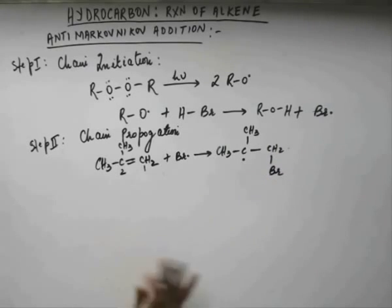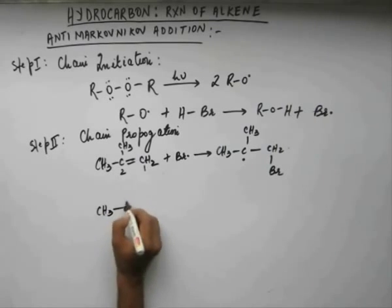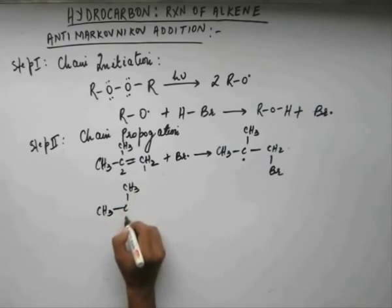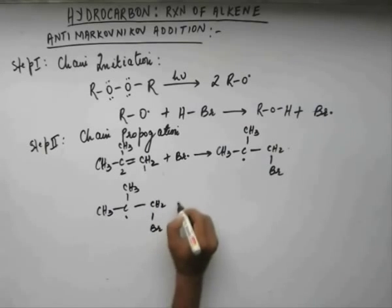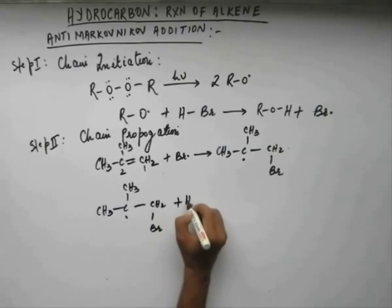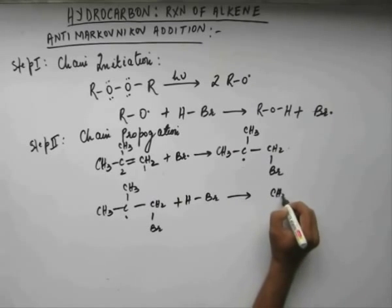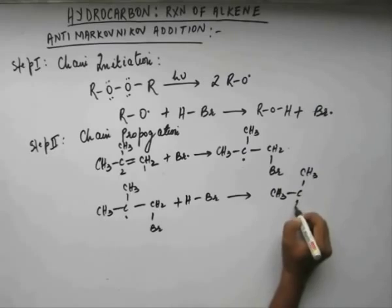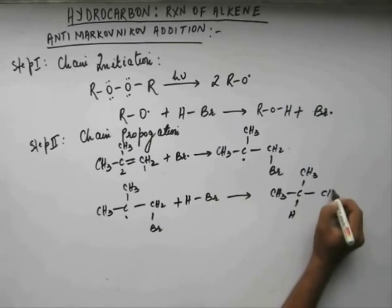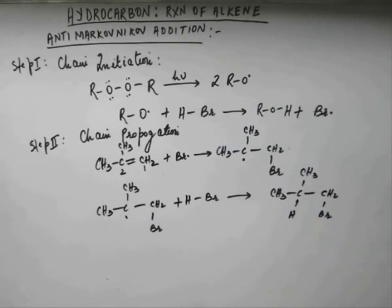This is the first step of chain propagation, and in the next step this free radical must also be satisfied. It reacts with HBr, grabs a hydrogen from HBr, completes its octet, and gives us an addition product in which H and Br are added.